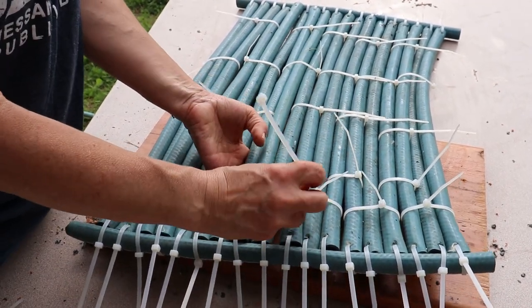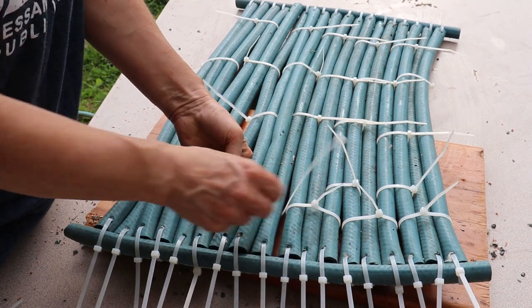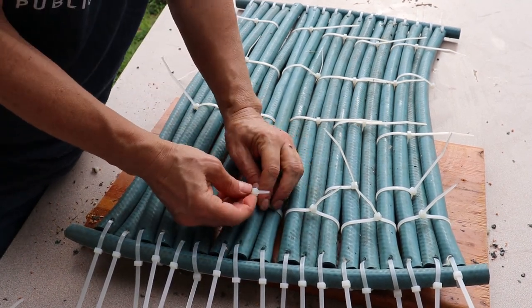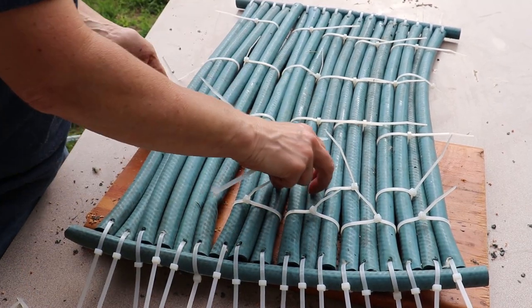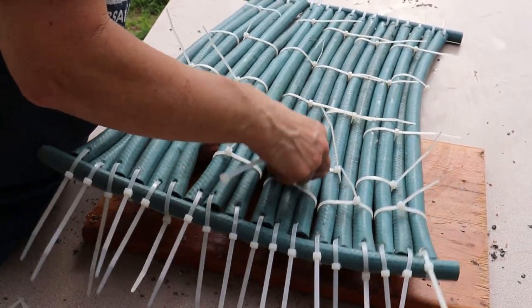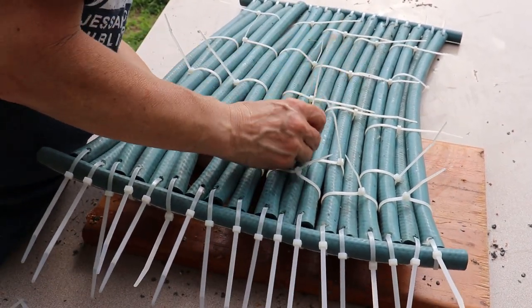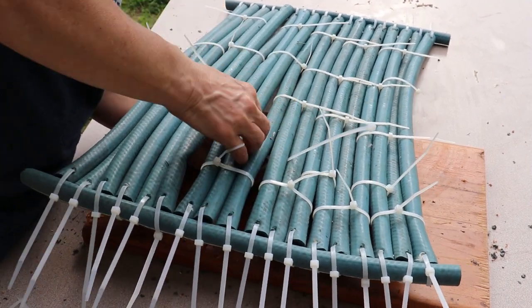So I'm zip tying every three pieces of hose together, just so they stay straight. And then I'm zip tying each group of three to one another through the outer two pieces of hose.